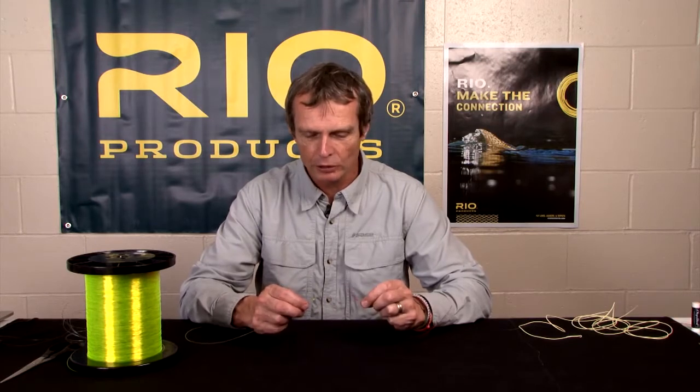The loop-to-loop join is simply a way of joining two loops together. You can join loops that you've tied or loops that are welded on fly lines or leaders, but when you've got two loops there's a good way to join them together. Believe it or not, there's a right way and a wrong way. Let's show you the right way first.